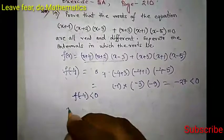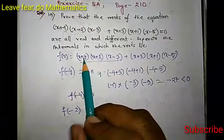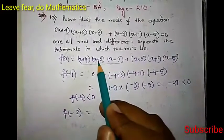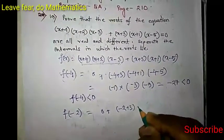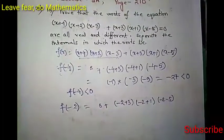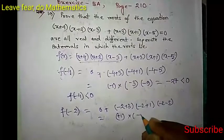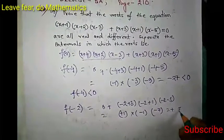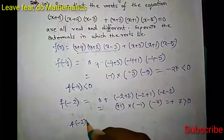Now let us calculate f(-2). If we put x = -2, then (x+2) = 0, so the first product becomes 0. The second part gives us (-2+3)(-2+1)(-2-5) = (1)(-1)(-7) = 7, which is clearly greater than 0. So f(-2) > 0.